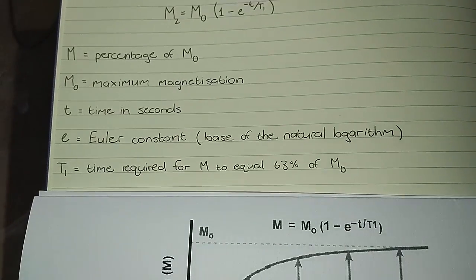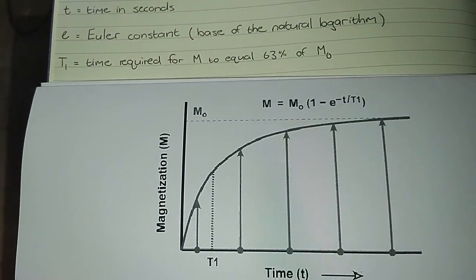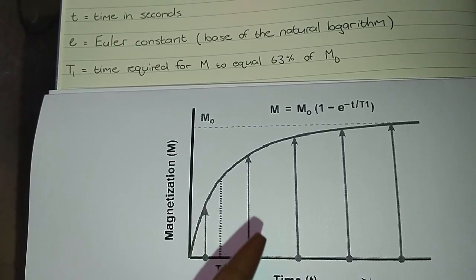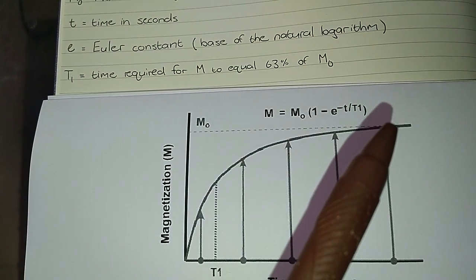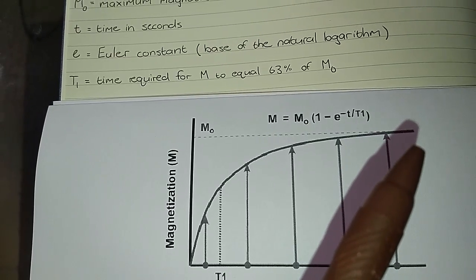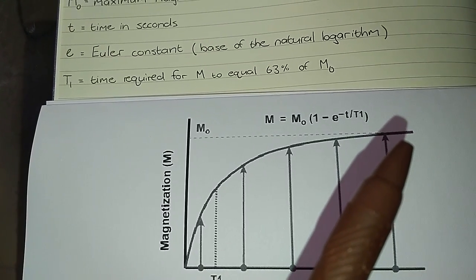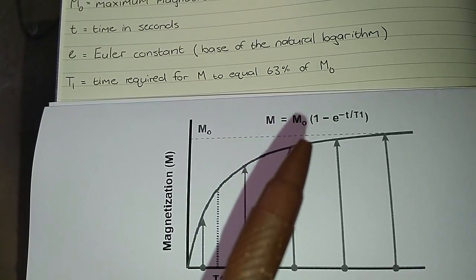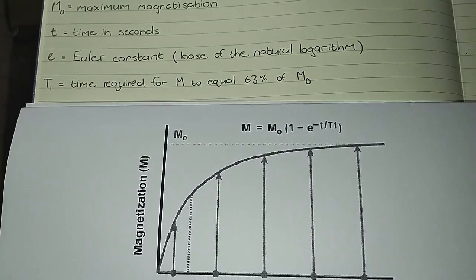Okay, so M naught is our maximum magnetization. M is a percentage of M naught, so our M value, as it says basically over here, will always be a percentage of M naught, never quite actually reaching the M naught value because when you reach M naught they're going to equal each other, they're going to cancel out, and you're going to end up not being able to calculate the value of T1.